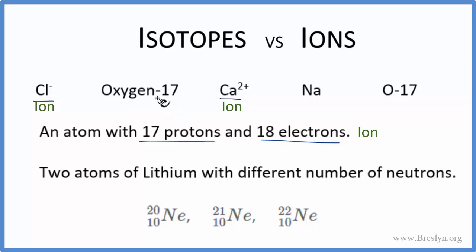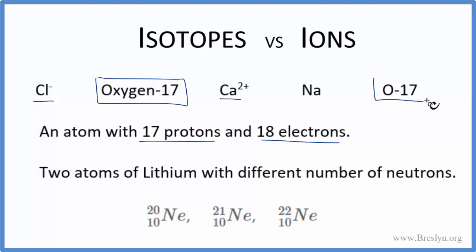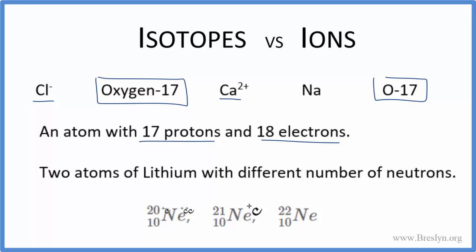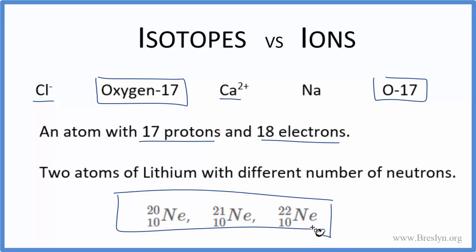When we look at something like oxygen-17 or O-17, that's called the hyphen notation, and we use that to identify isotopes. So this is an isotope, and oxygen over here — that's an isotope too. We also know that these are isotopes written in nuclear notation. The 10 is the same because that's the atomic number — the number of protons. Neon always has 10 protons. The top is the mass number — protons plus neutrons — and what's different here is the neutrons, so these are isotopes of neon. For the two atoms of lithium with different numbers of neutrons, different neutrons means isotopes.